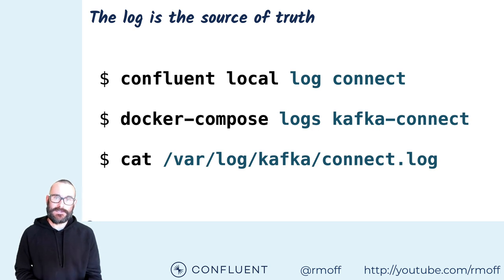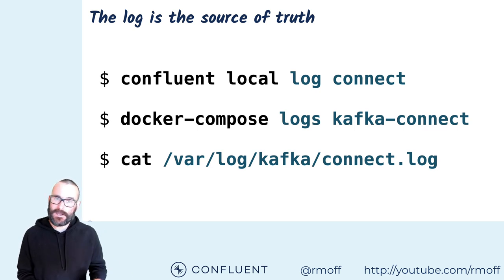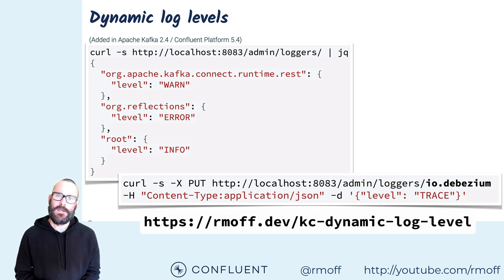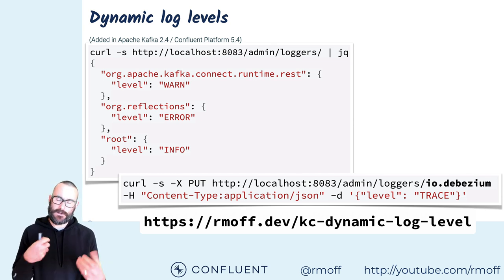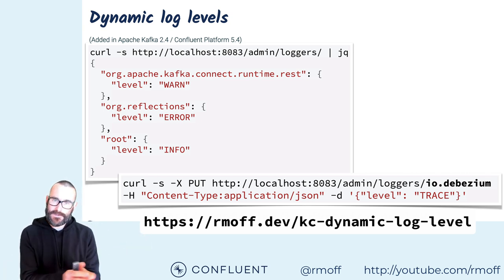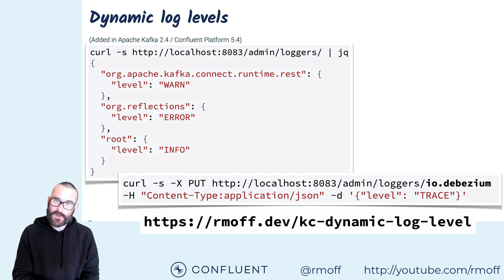A lot of the time we end up going down into the log. Where you get the log from depends on how you've deployed Kafka Connect — did you use the Confluent CLI, Docker, or bare metal? One of the really useful things added in Apache Kafka recently was dynamic log levels. If you've got a Kafka Connect worker running and you're having problems with a connector, you can change the log levels dynamically as it's running, targeting specific loggers. If you set all the debugging to debug or trace, you just get screen-fulls of stuff. But you can target a particular logger for a particular connector, set those to debug or trace, which makes it much easier to find out what's going on.